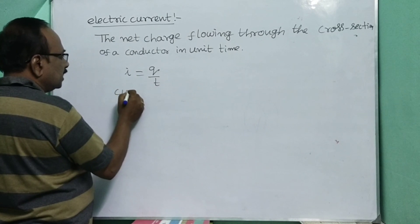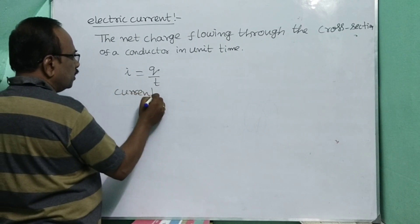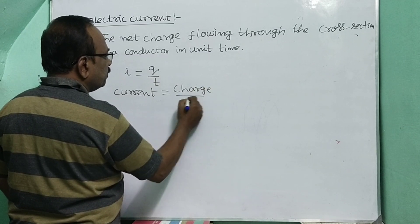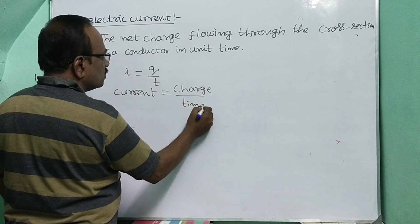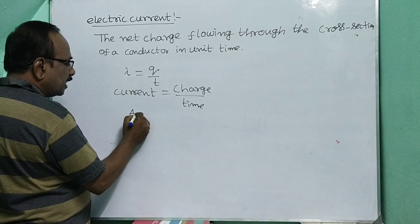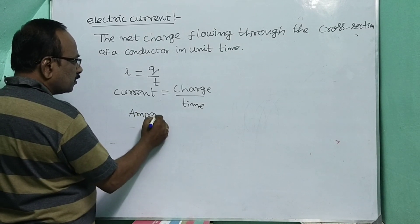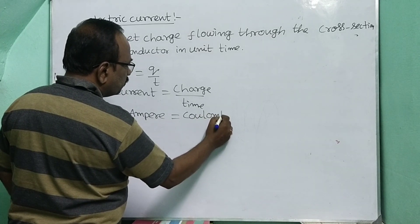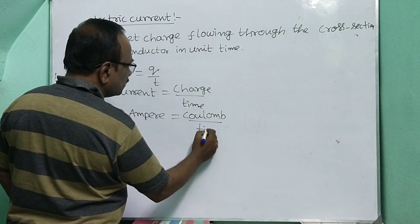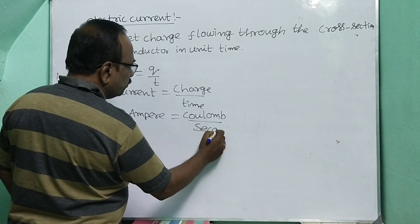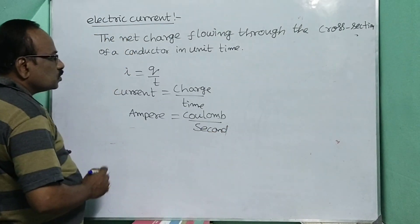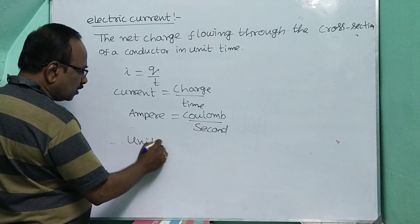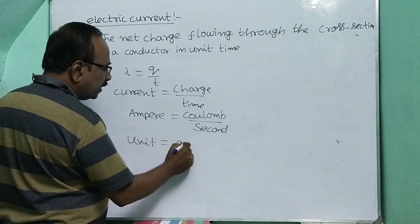The unit of current is ampere. The unit of charge is coulomb. The unit of time is second. You must keep these in mind. In the SI system, the unit of current is ampere — we always use ampere in examinations and formulas.